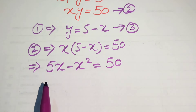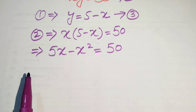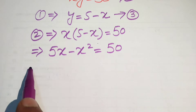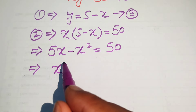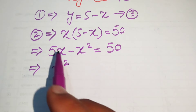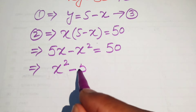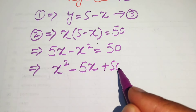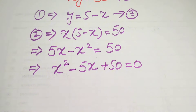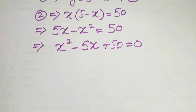We can see that this is a quadratic equation but not in standard form, so we convert it into standard form. We move the terms to the right-hand side: negative x squared becomes plus x squared, plus 5x becomes minus 5x, and 50 stays on the right, giving us x squared minus 5x plus 50 equals 0. This is now in standard form in x.